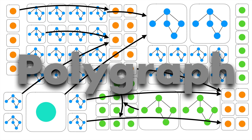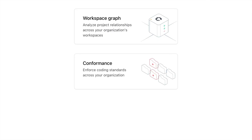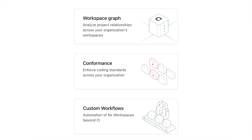So what is Polygraph? Polygraph is a suite of tools that right now consists of three different elements, but it's going to grow over time. These elements are: the workspace graph, which analyzes project relationships between different repos; conformance, which allows you to write rules to enforce consistency across all the repos in your organization whether they use NX or not; and custom workflows, which allows you to run scheduled tasks to automate things like conformance enforcement and data collection.